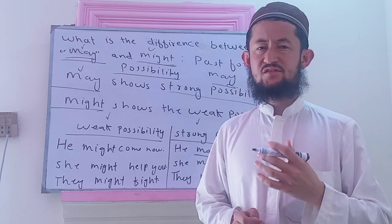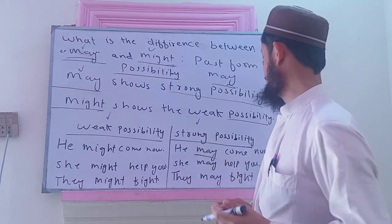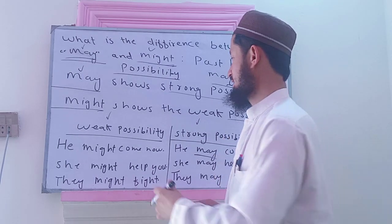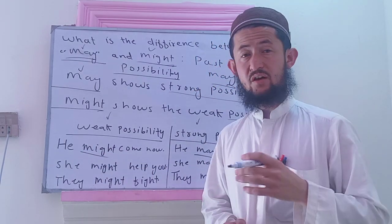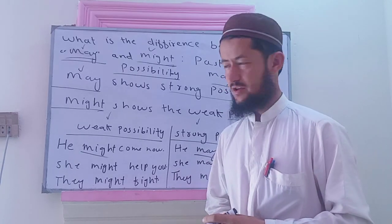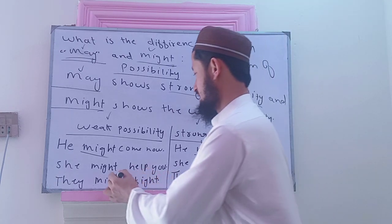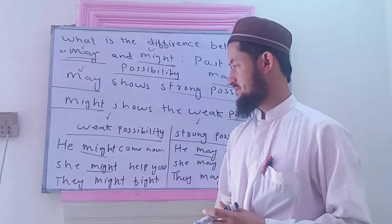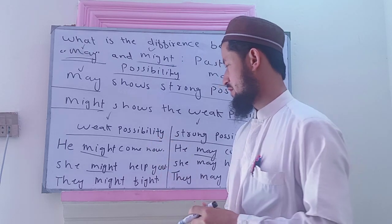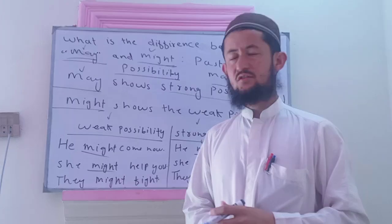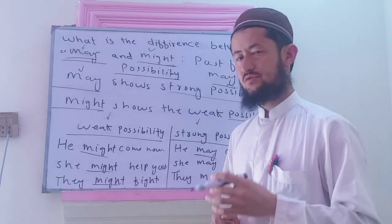Might shows hesitation, doubt, shyness — jis cheez mein answer refusal ho sakta hai. Might shows weak possibility — jis ka imkan kam ho. For example: 'He might come now' — shayad wo abhi aa jaye, lekin us ke aane ke imkan kam hain. 'She might help you' — shayad wo aapki help kare, possibility 30-40% ho sakti hai.